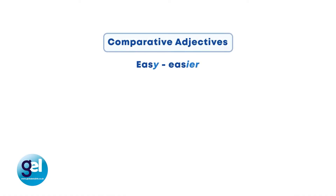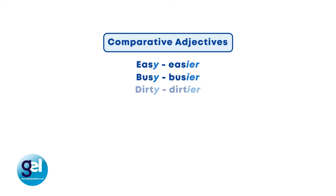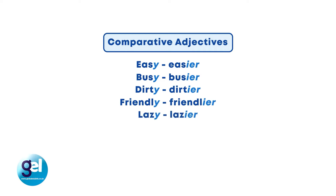With two-syllable adjectives that end in a y, we change the y to i and we add -er. So the adjective easy — we take out the y and add -ier and it becomes easier. Busy becomes busier, dirty becomes dirtier, friendly becomes friendlier, lazy becomes lazier, and pretty becomes prettier.